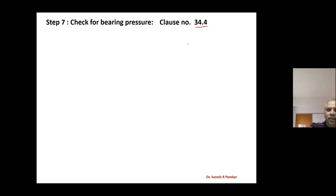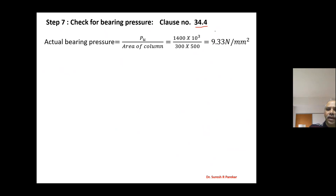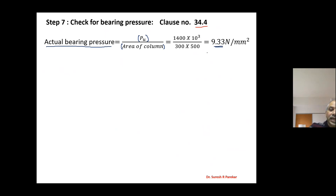Then we check for bearing pressure as per Clause 34.4. We calculate actual bearing pressure — here we do not consider self-weight of footing — and divide by area of column to get actual bearing pressure on the column. A1 is BF into LF, which we have already calculated.